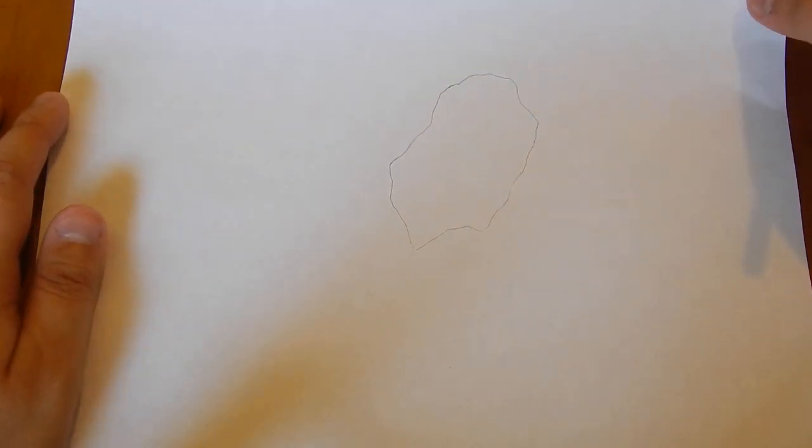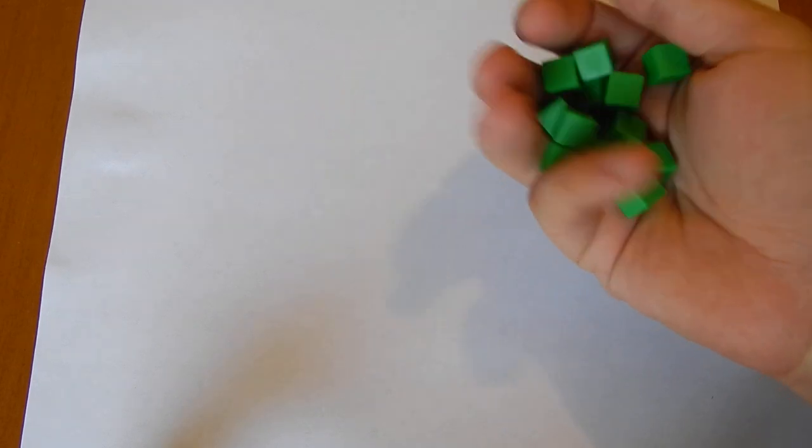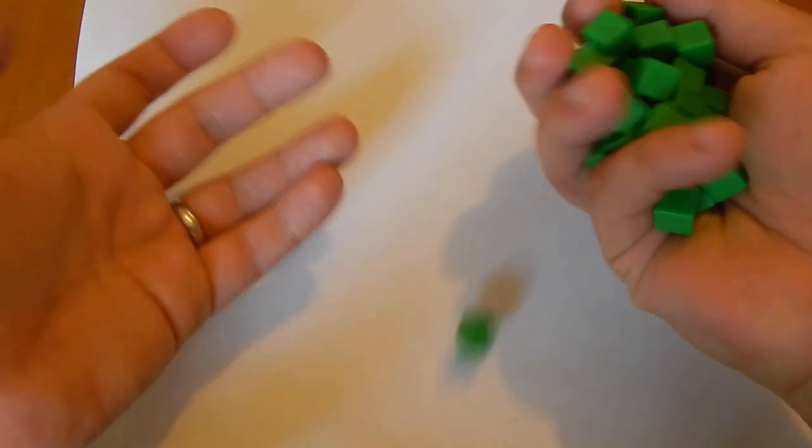So a good way to speed up this whole process, and add a little bit of an unexpected element to it, is to use something like these. Any small object will work. I tend to use these because they're convenient, I have a whole lot of them.